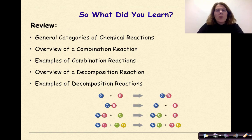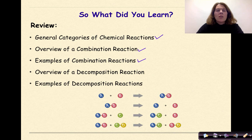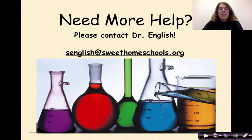So what did you learn? We went over the general categories of chemical reactions. We did an overview of a combination reaction, which is also known as a synthesis reaction, and some examples of combination reactions. We did an overview of a decomposition reaction and some examples of decomposition reactions. Need more help? Feel free to contact me. Have a great day.